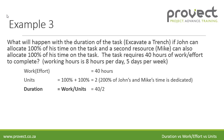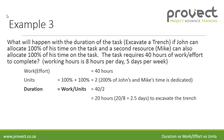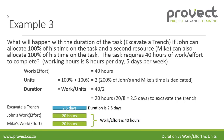Duration is work divided by units: 40 divided by two equals 20 hours. Twenty hours divided by eight is 2.5 days. So it will take 2.5 days to excavate the trench if both John and Mike allocate 100% of their time on the task. John will be working 20 hours and Mike will be working 20 hours.